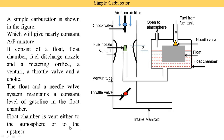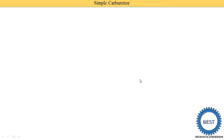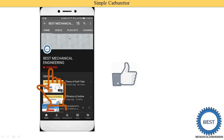The float chamber is vented — it is open either to the atmosphere as seen in this figure, or to the upstream side of the venturi. Upstream means from where the flow starts; downstream is where the flow ends. Depending on the direction of airflow, the vent is connected accordingly. I request you to like the video and subscribe the channel, and visit the playlist for more videos on IC engines and mechanical engineering.